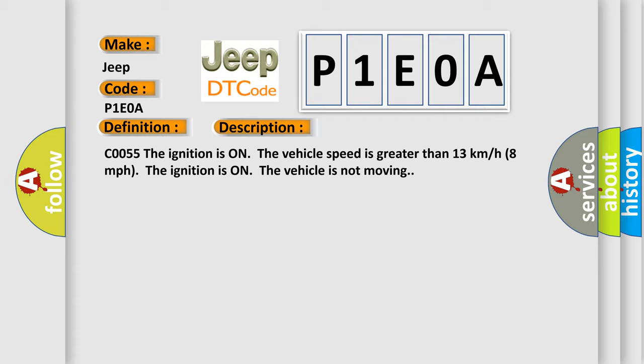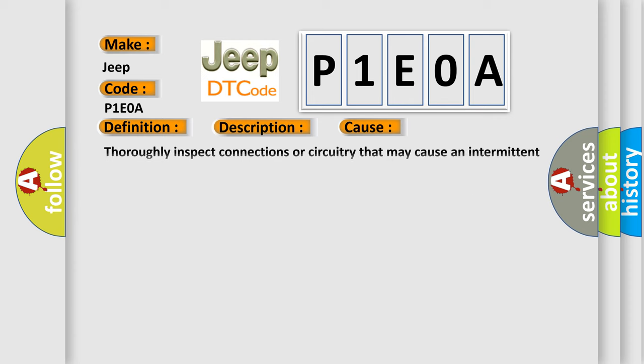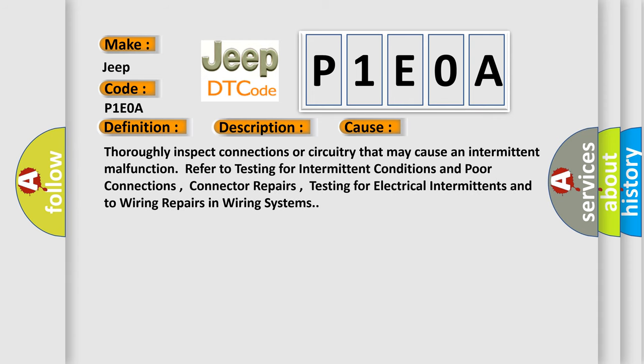This diagnostic error occurs most often in these cases: Thoroughly inspect connections or circuitry that may cause an intermittent malfunction. Refer to testing for intermittent conditions and poor connections, connector repairs, testing for electrical intermittence and to wiring repairs in wiring systems.